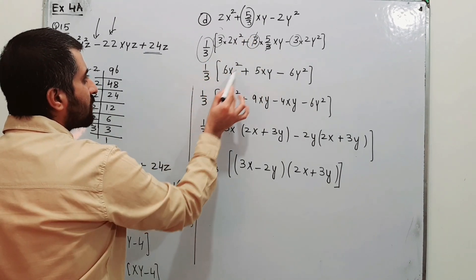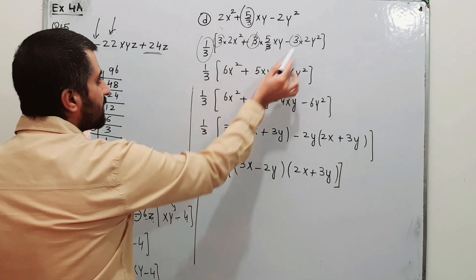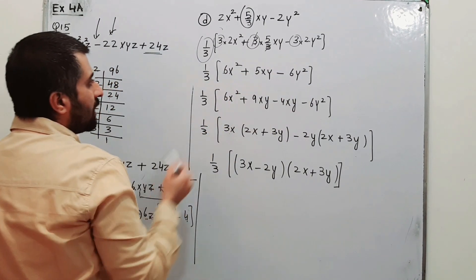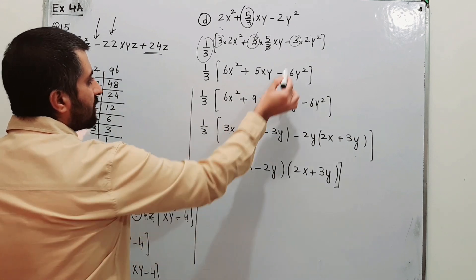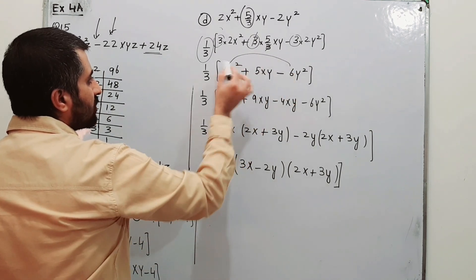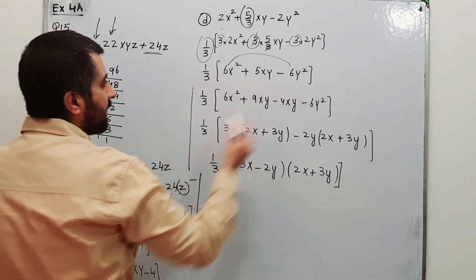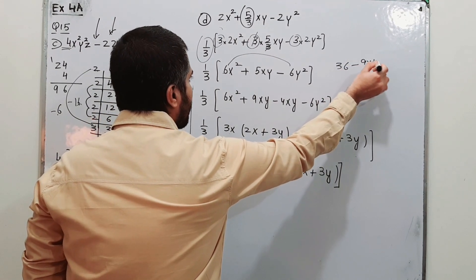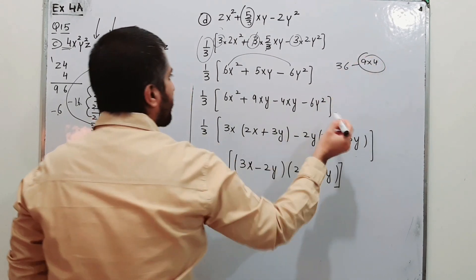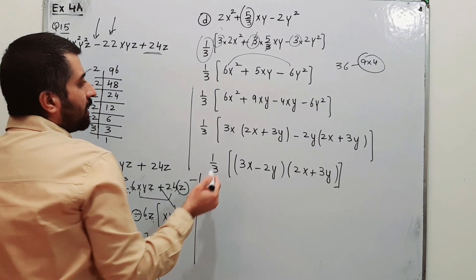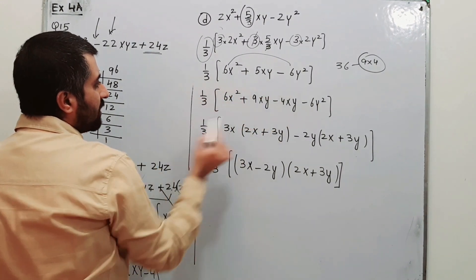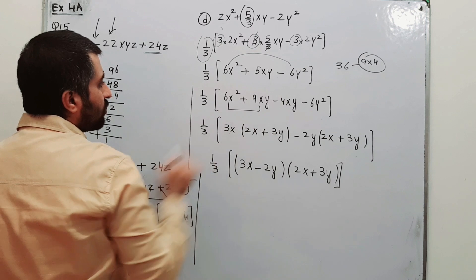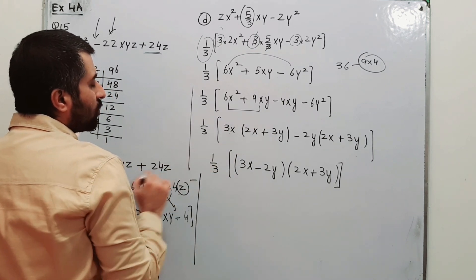Inside the bracket, factorize 6x² + 5xy minus 6y². Multiply 6 by 6 to get 36, and find a factor pair of 36 whose difference gives 5: that is 9 and 4, since 9 minus 4 equals 5. So we split 5xy into 9xy minus 4xy.